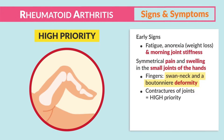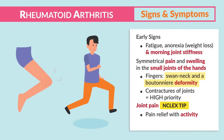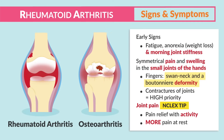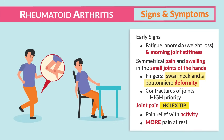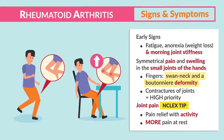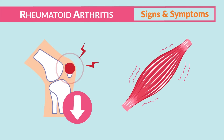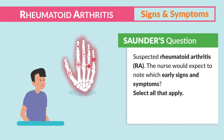A big point: RA joint pain — clients get relief with activity and have more pain at rest. Write that down. This is very different from osteoarthritis, where we see more pain with more activity. For RA: pain relief with activity and more pain at rest, which results in deconditioning of the joints due to decreased muscle strength.